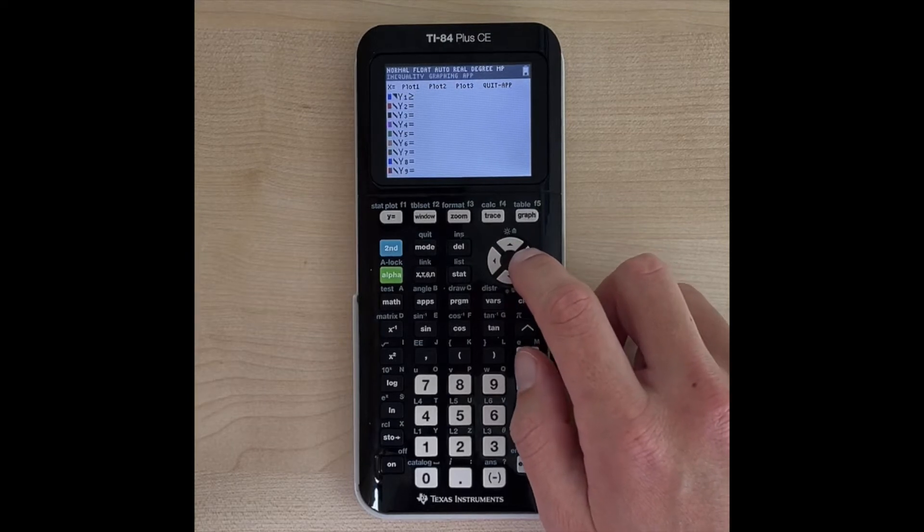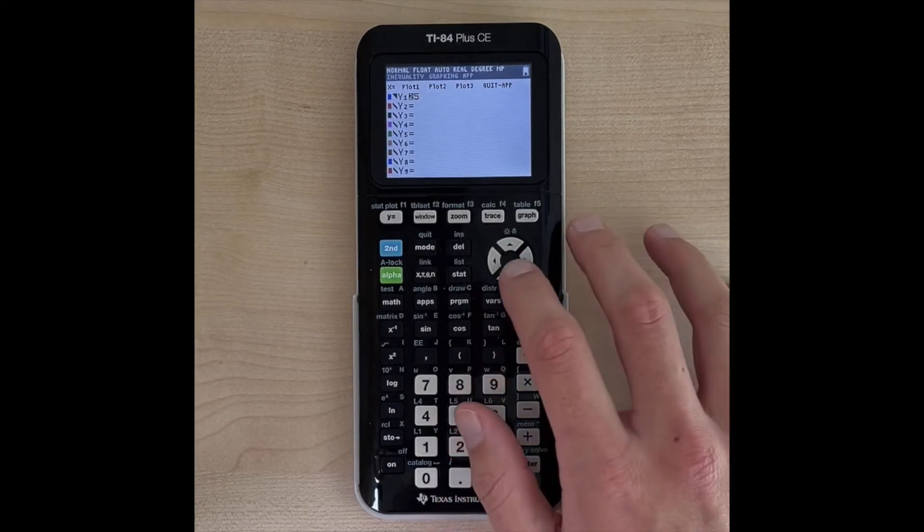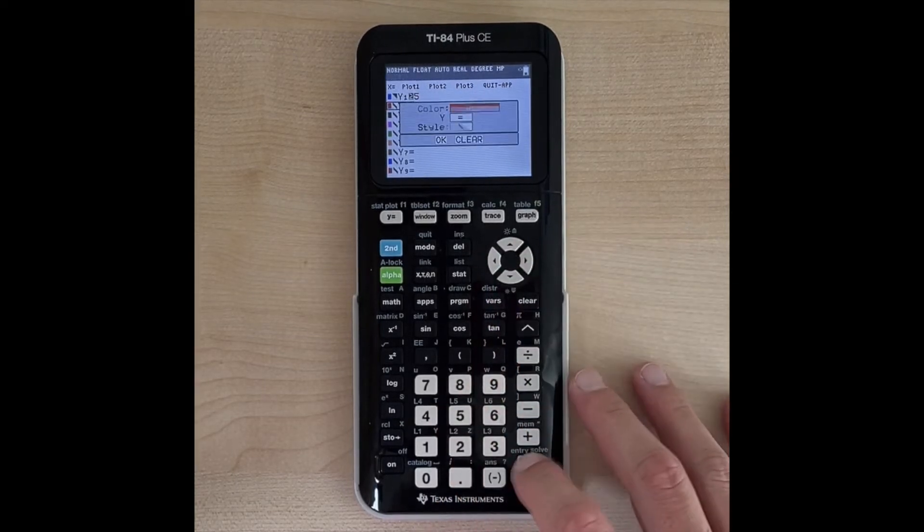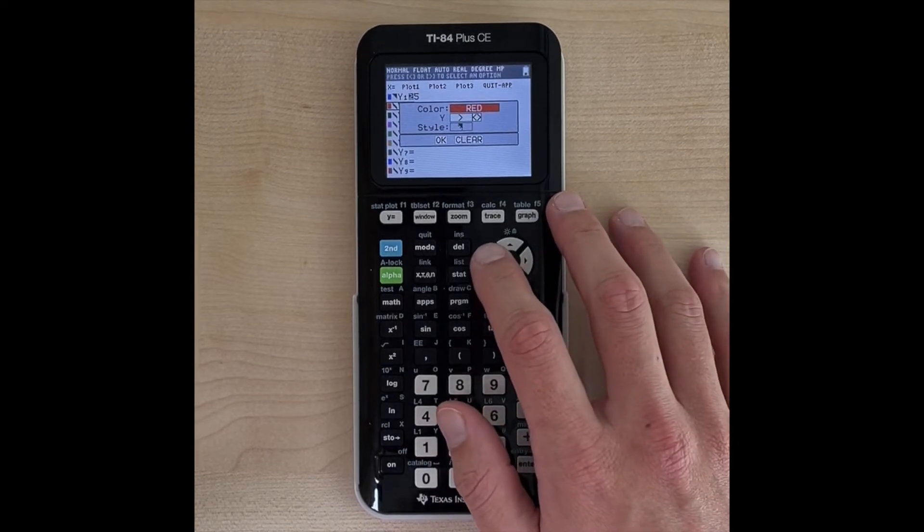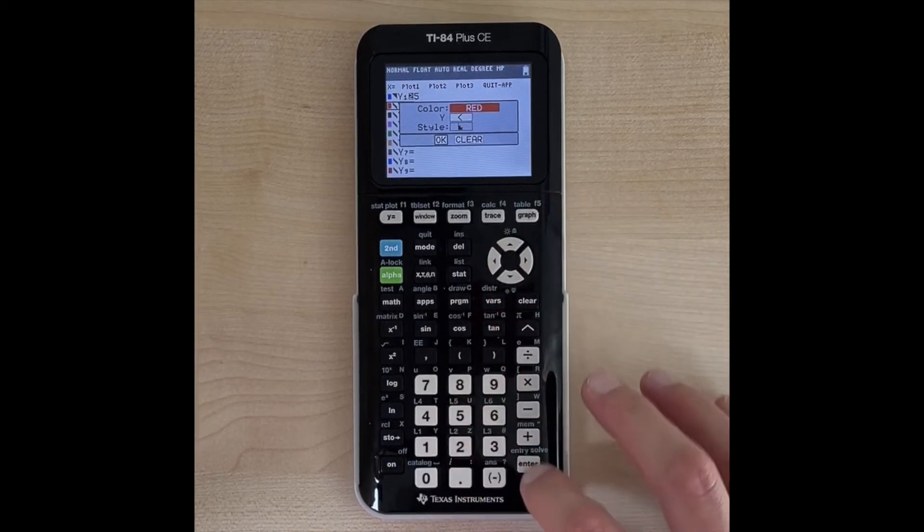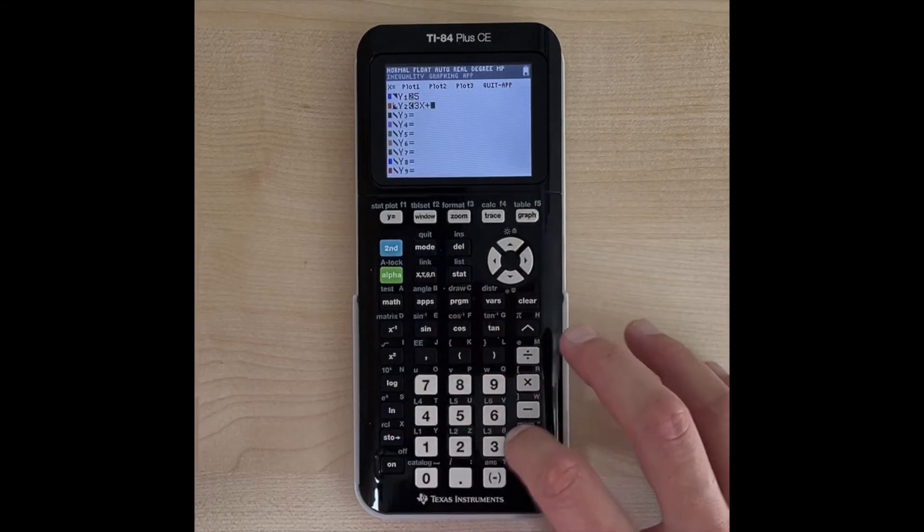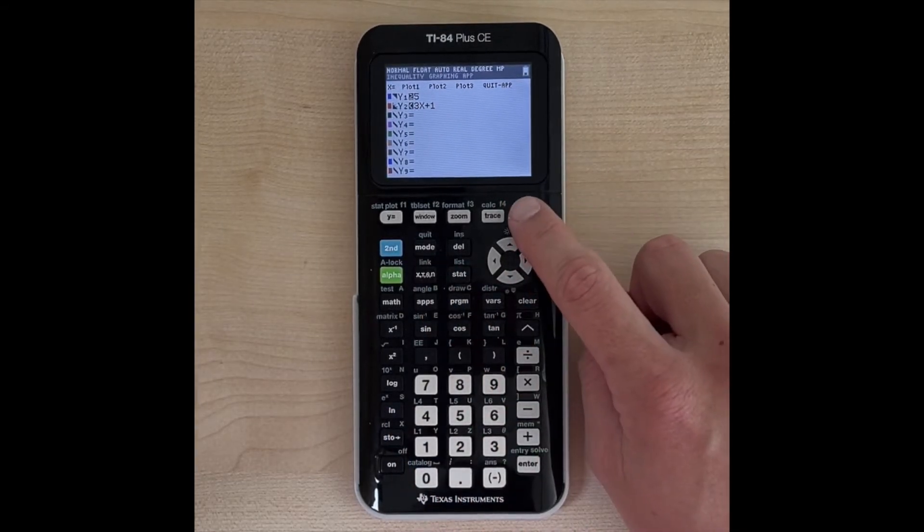All right, so for this first one, I'm going to graph y is greater than or equal to 5, and for the second one, I'm going to change this to less than. So I'm going to graph y is less than 3x plus 1, and now all we need to do is hit graph.